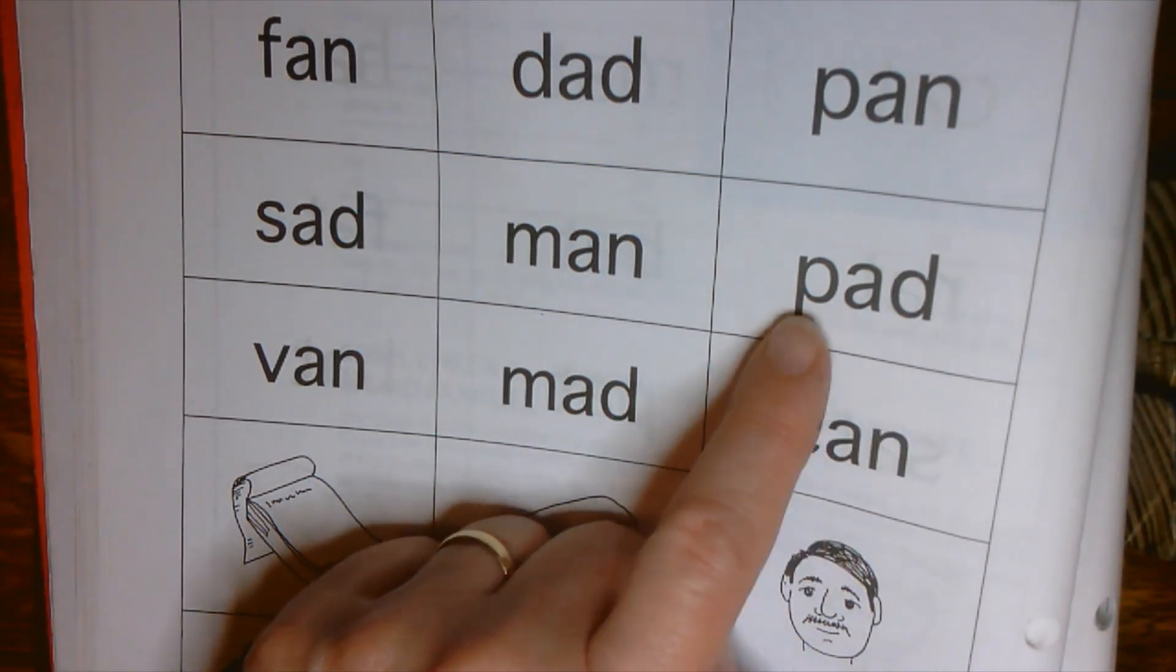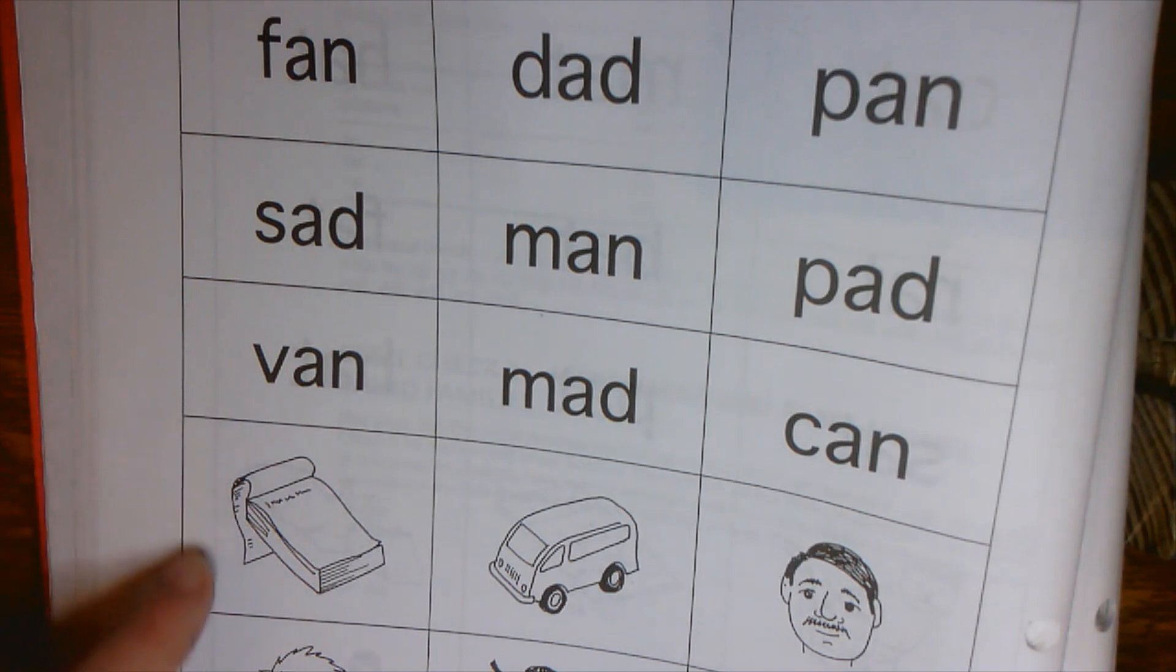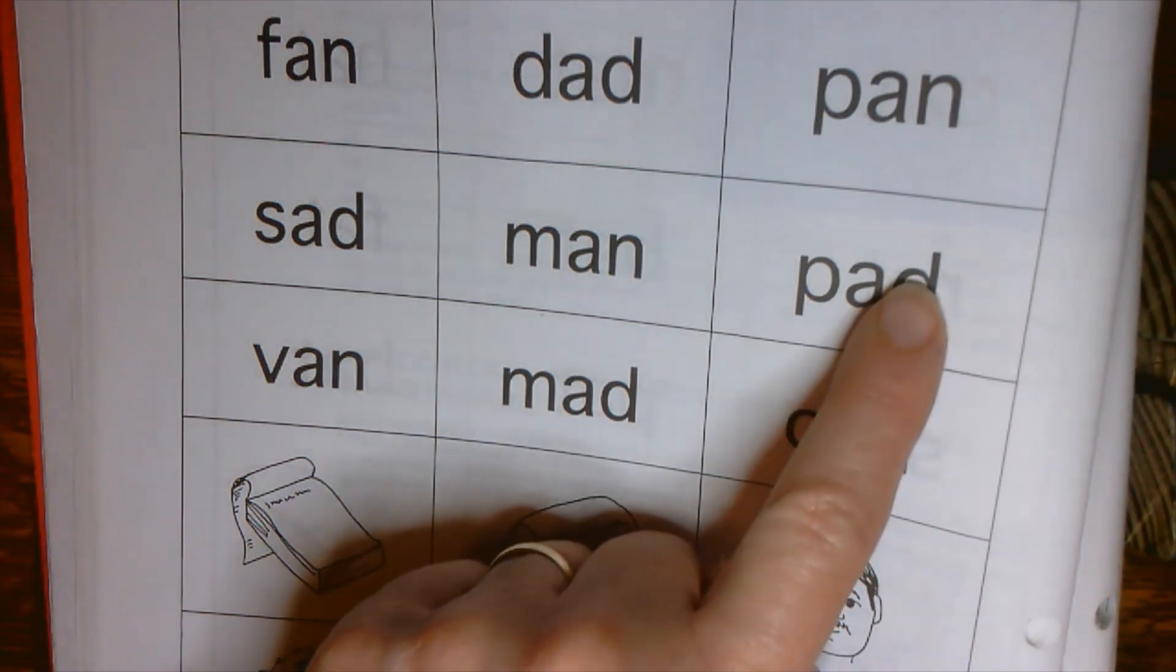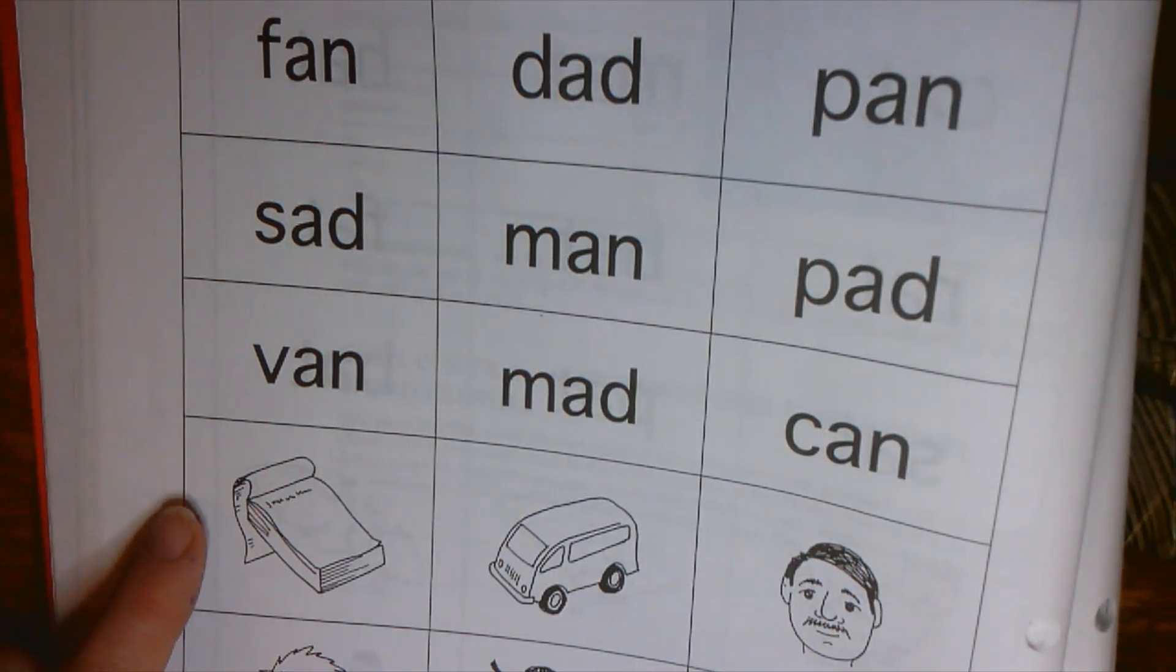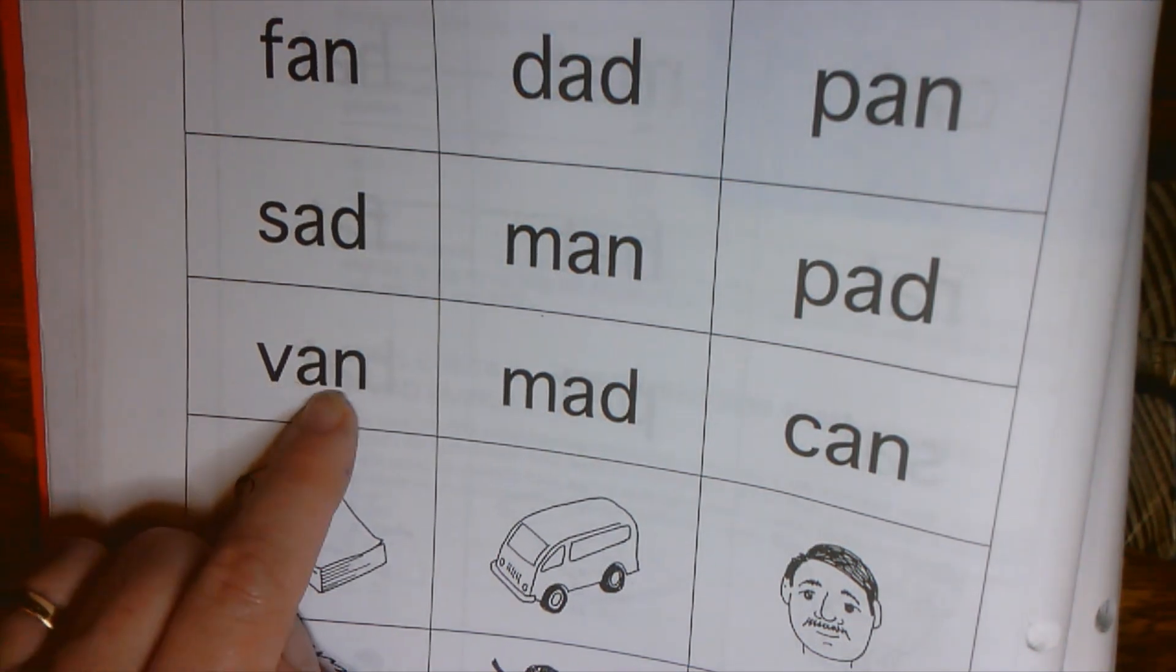P, AD, PAD. This is like pad of paper, so you have a picture that when they're all cut out, you can put the word PAD next to the picture of the pad of paper. V, AN, VAN.